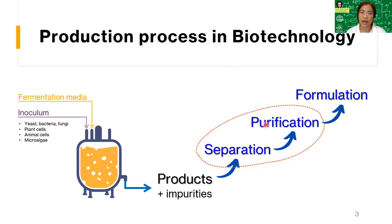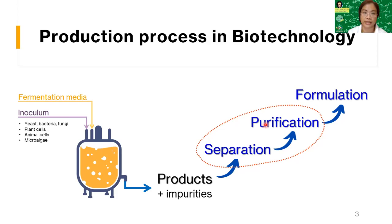How much purity you want actually depends on your end product. Designing the downstream process in biotechnology depends on the source of the product and its application. For example, if you are producing an enzyme, you could produce a crude enzyme and probably not need any downstream processing at all. Or if you want a very pure enzyme, you will need a lot of downstream processing — and along the way, you are going to lose some product.